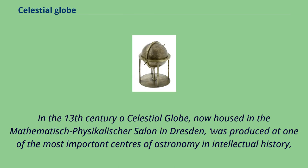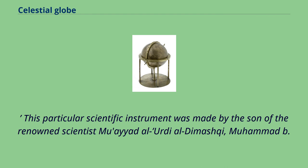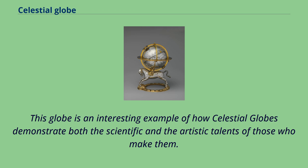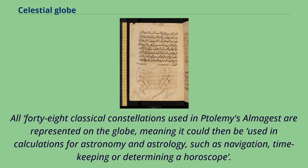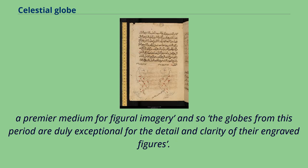In the 13th century, a celestial globe now housed in the Mathematische Physikalischer Salon in Dresden was produced at the Ilkhanid Observatory at Maragha in northwestern Iran, constructed in 1259 and headed by Nasir al-Din al-Tusi, the renowned polymath. This instrument was made by Muhammad ibn Muawwad al-Urdi in 1288, son of the renowned scientist Muawwad al-Urdi al-Damashki. All 48 classical constellations from Ptolemy's Almagest are represented, enabling its use in astronomical and astrological calculations. Artistically, it reflects the exceptional tradition of 13th-century Iranian inlaid brass, notable for the detail and clarity of its engraved figures.